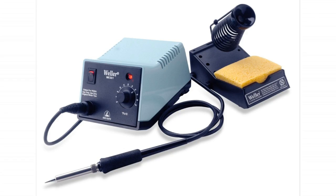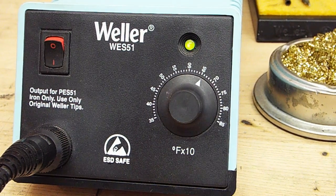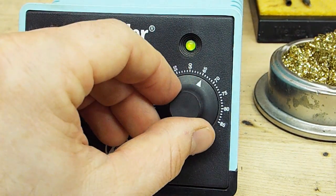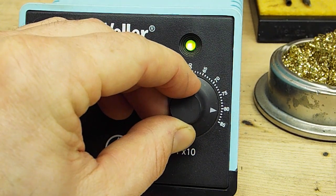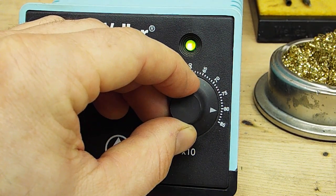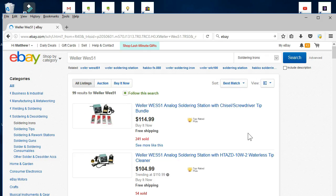I use the Weller WES-51 soldering station because it has a variable output up to 50 watts. For most flashlight related projects, I keep it tuned to about 810 degrees. You can pick these up for around $100.